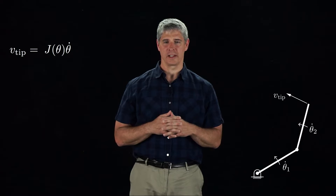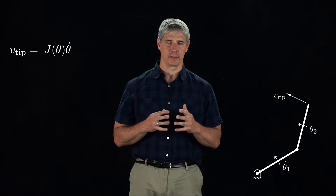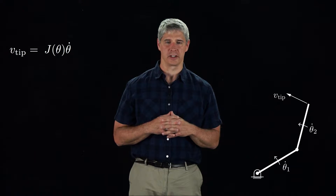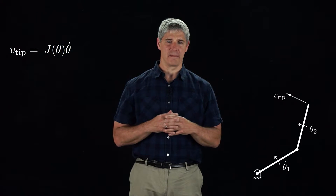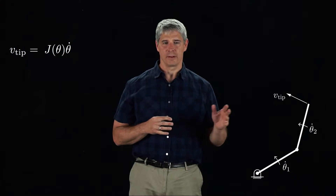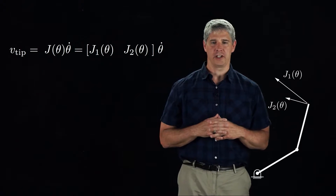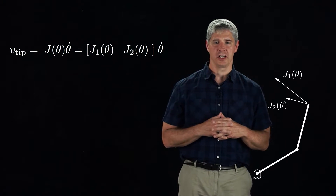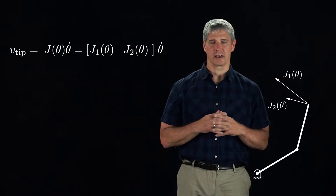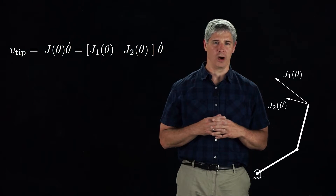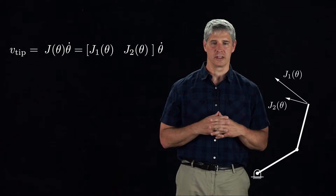In the previous video, the robot's end effector velocity v-tip was the time derivative of a minimum set of coordinates describing the end effector's configuration. The Jacobian J maps the joint velocities to v-tip. For this 2R robot, the Jacobian has two columns, one for each joint, which we call J1 and J2. Each column is the contribution to v-tip when the speed at that joint is 1 and the speed at all other joints is 0.